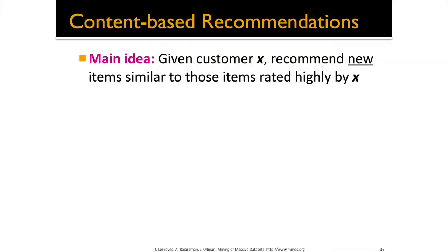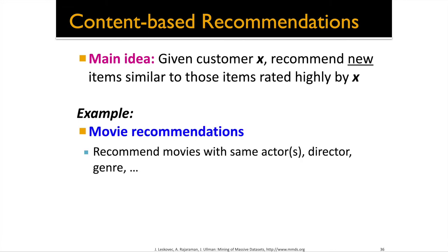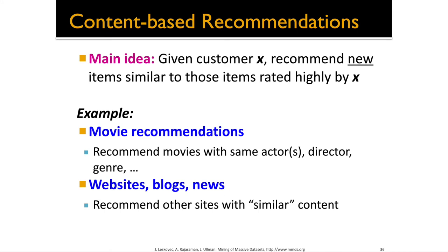The main idea: we have a customer and want to show new content they're likely to rate highly but have never rated before. For content-based recommendation, we want to characterize something about the movie — for example, show you movies with similar actors, the same director, or the same genre. For websites, blogs, or books, we can look at the text and characterize the content therein, then show you other sites or books with similar content. How you operationalize this similarity assessment is one of the core pieces of content-based recommendation.